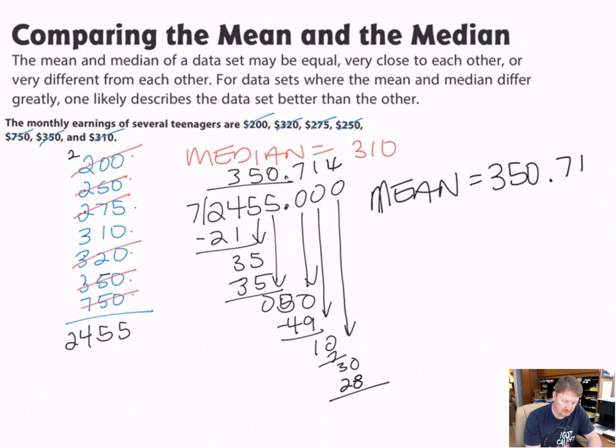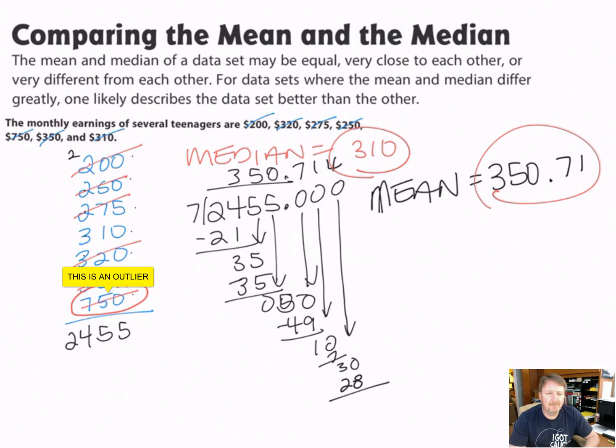Here I am just doing the division. I can round and say the average or the mean of the data is $350 and 71 cents. Here I feel like I made a mistake adding, so I checked my work. No, I did add that right. So $350.71 is the mean. So they are definitely different. One's $310, this one's $350. Why the difference?